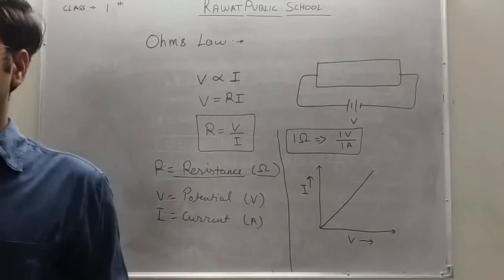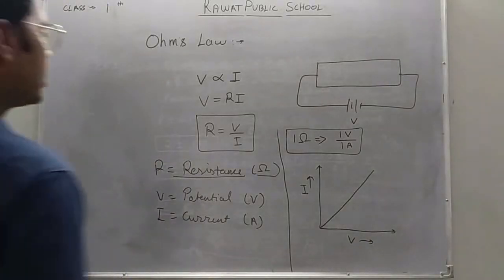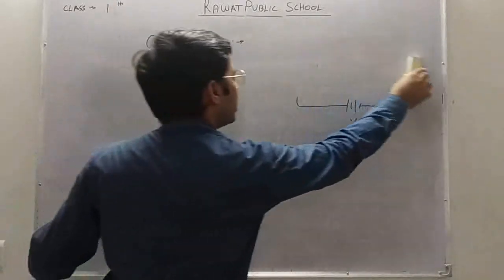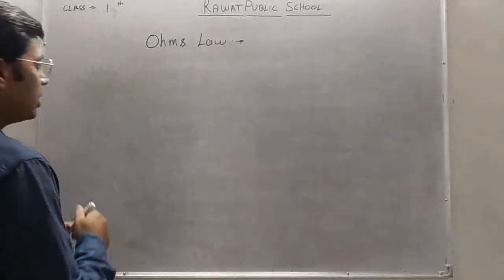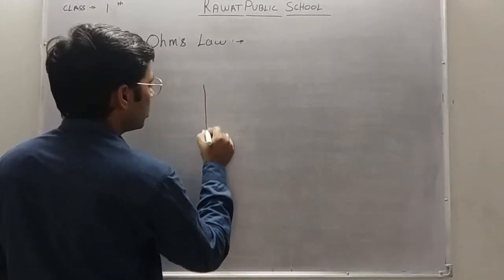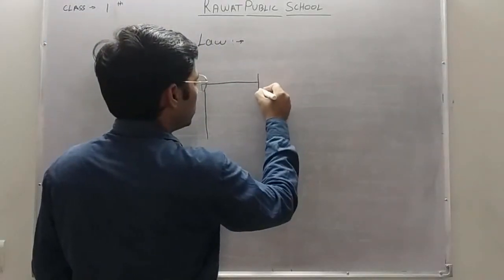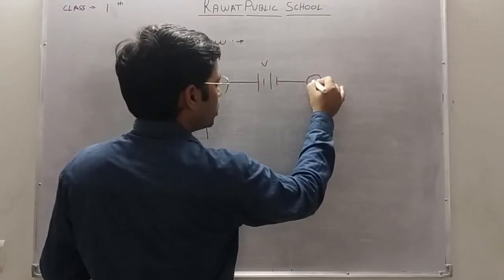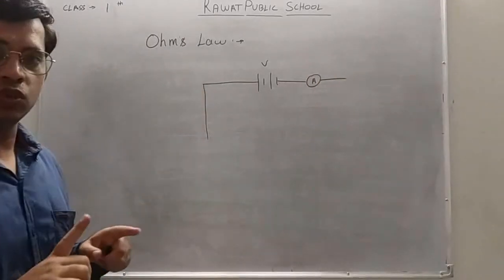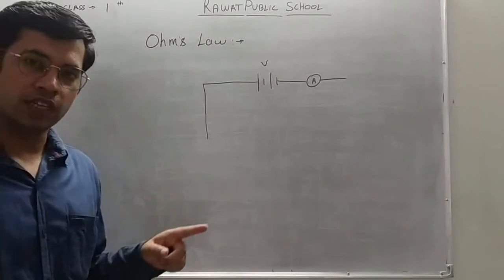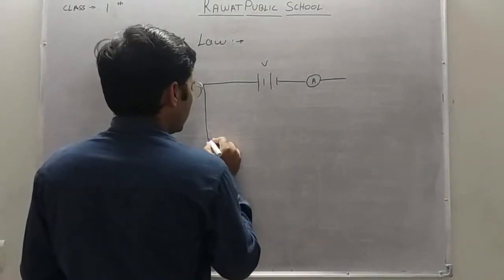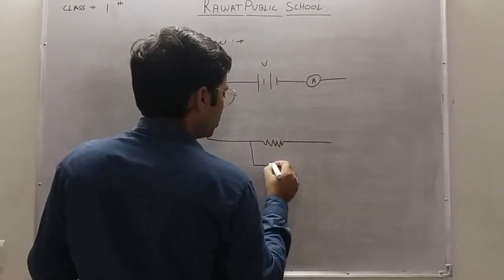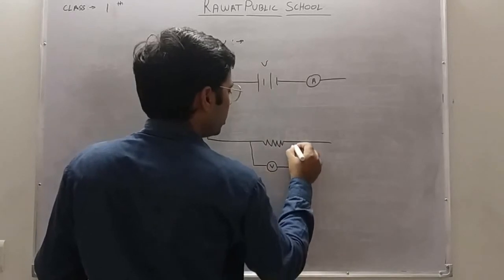Now, resistance can be measured using a circuit — this is also your practical in class. We use an ammeter, which is a device used to measure the current flowing in the circuit. We also use a voltmeter to measure the voltage, and the voltmeter is connected in parallel to measure the resistance.